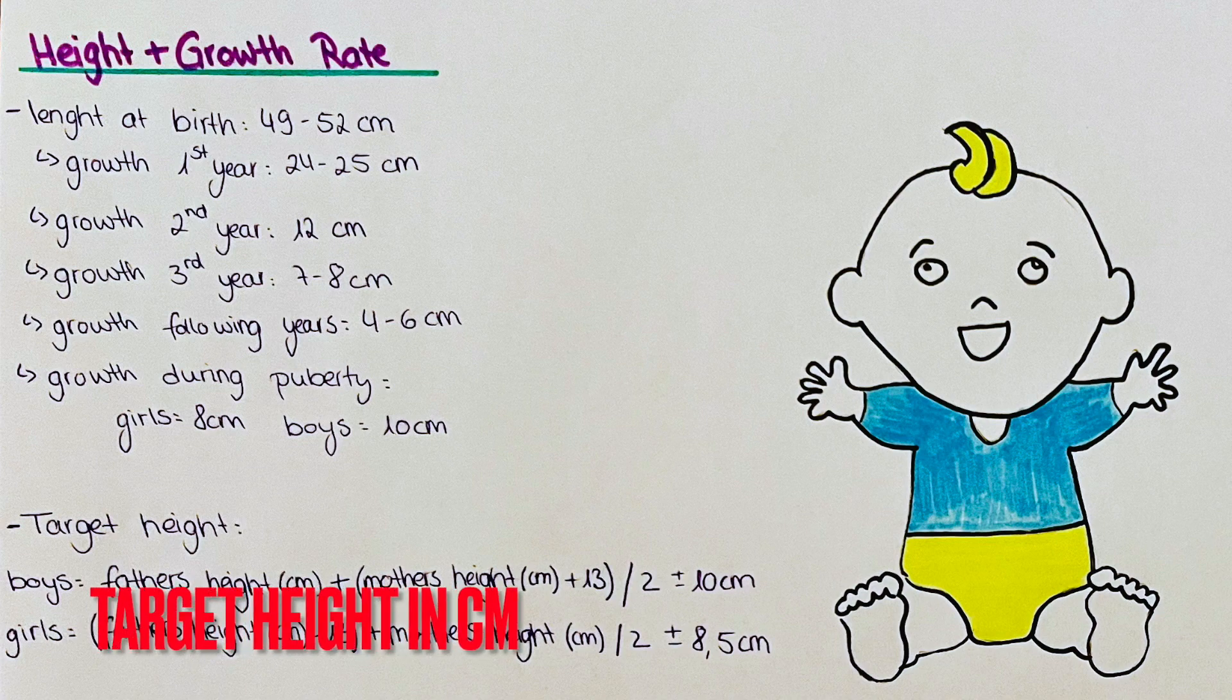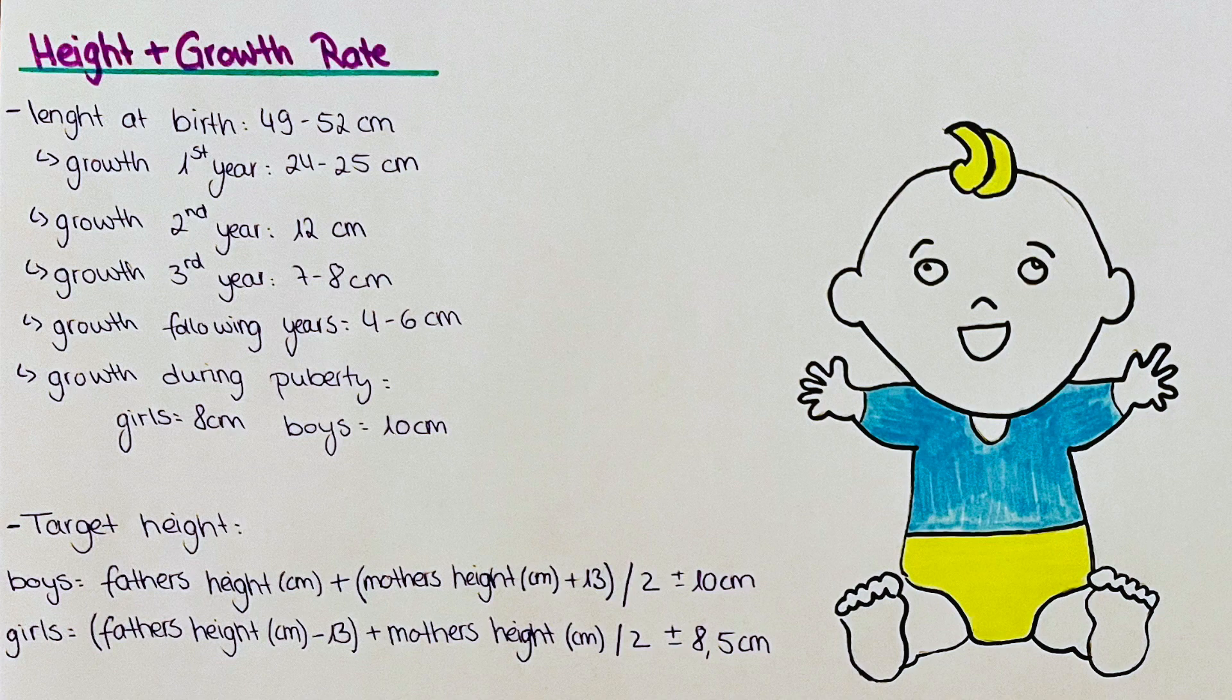Next I want to talk about target height, which is a calculation that physicians do to roughly calculate the predicted adult height of a child when it's fully grown. It takes into account the height of the mother as well as the father and varies a bit for boys and girls.